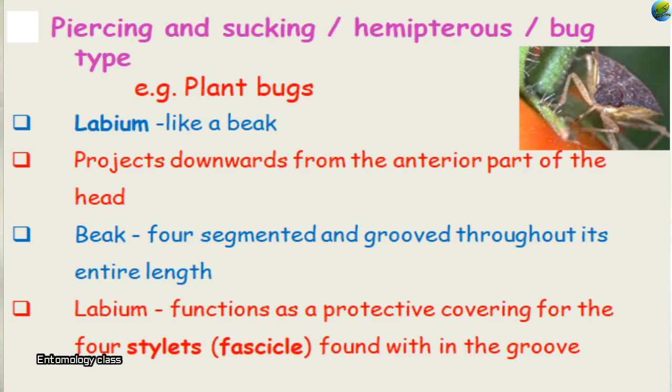When the insect has to feed, it pierces the stylets inside the tissue of the plant. Most insects of the plant bug group have this kind of mouthpart, which is why they are called the bug type or hemipteroid type. Hemipteroid refers to the order of bugs.